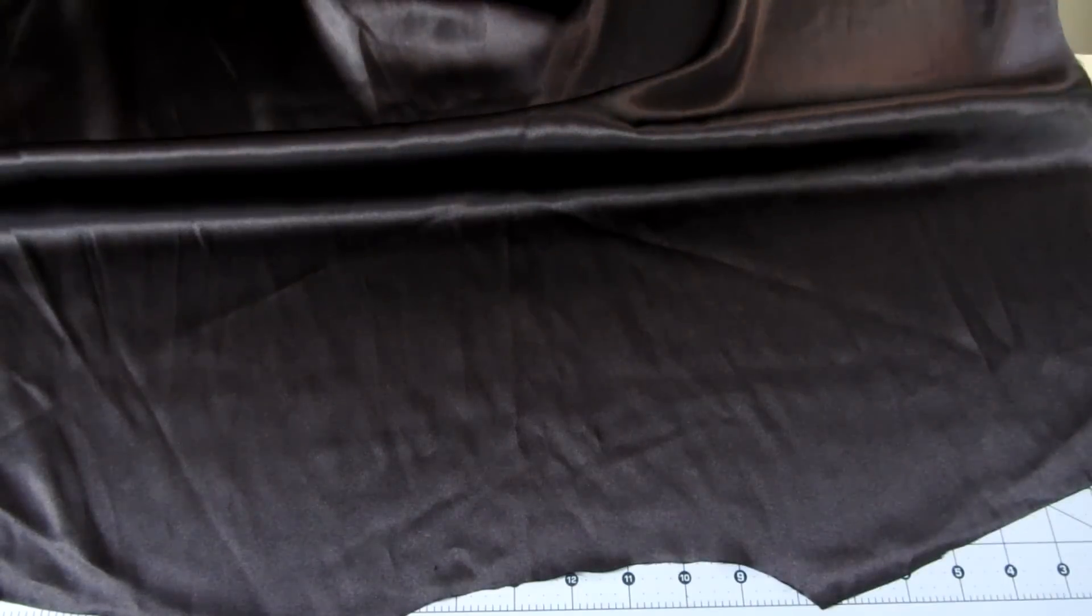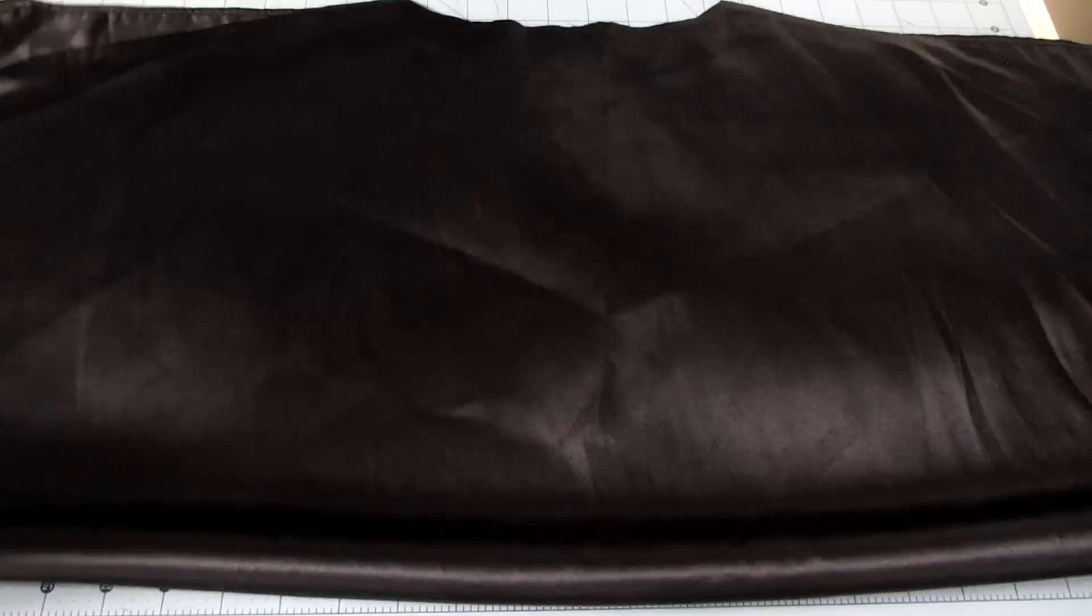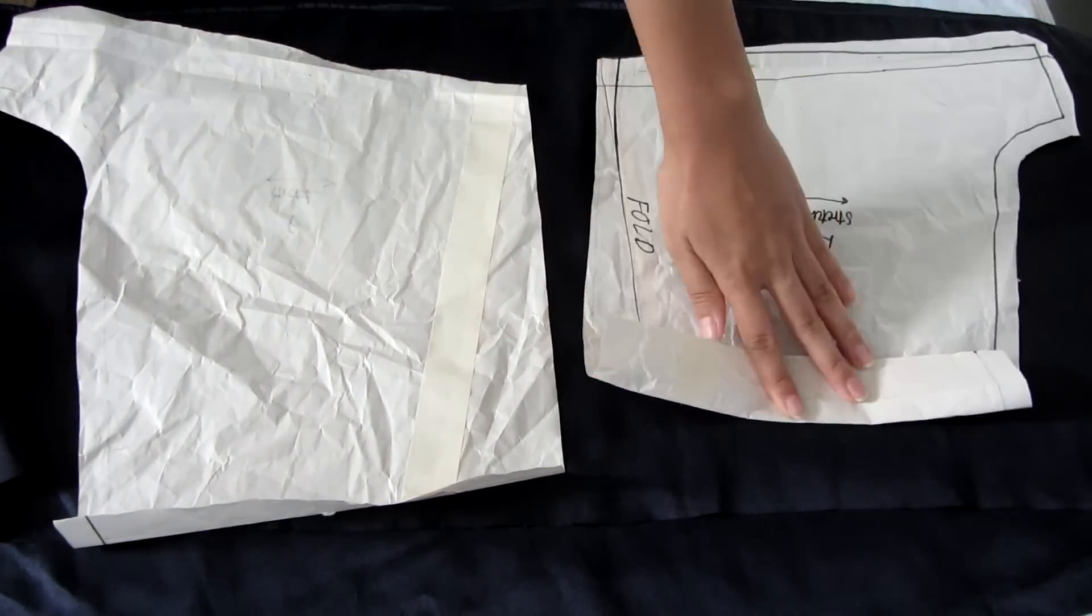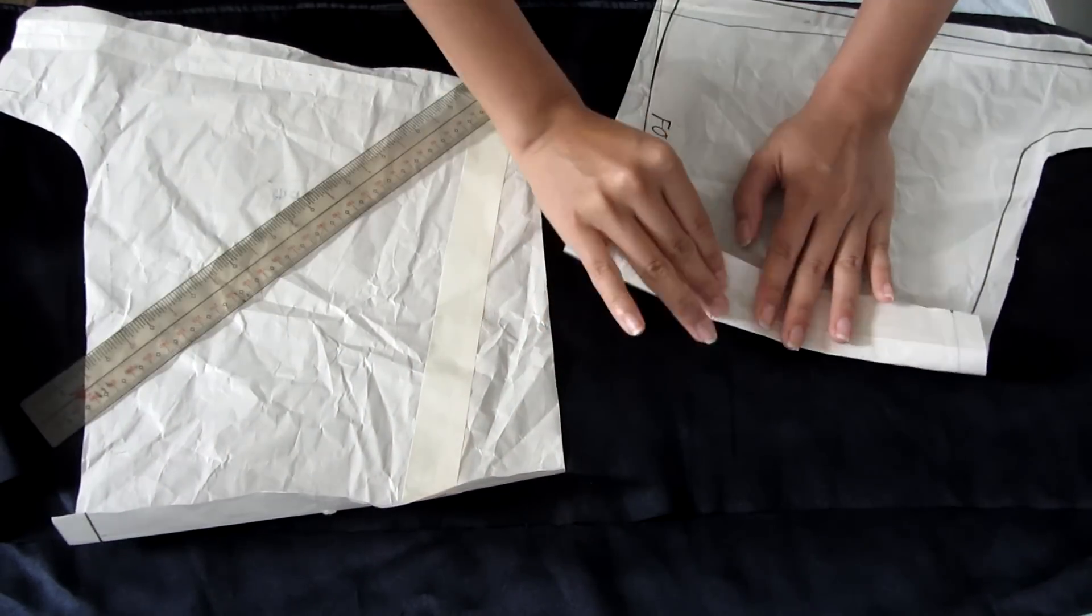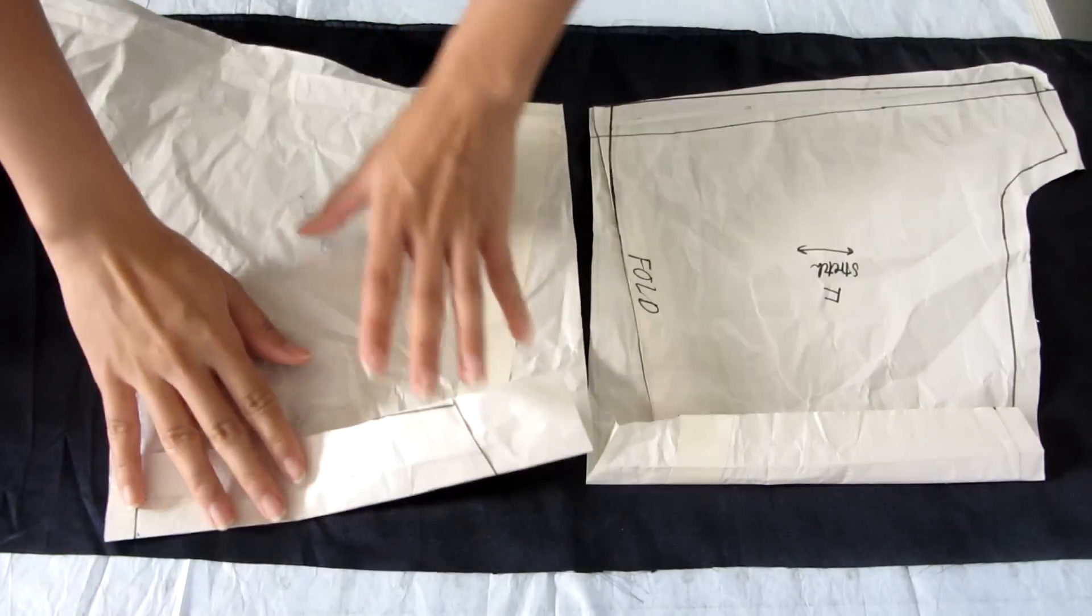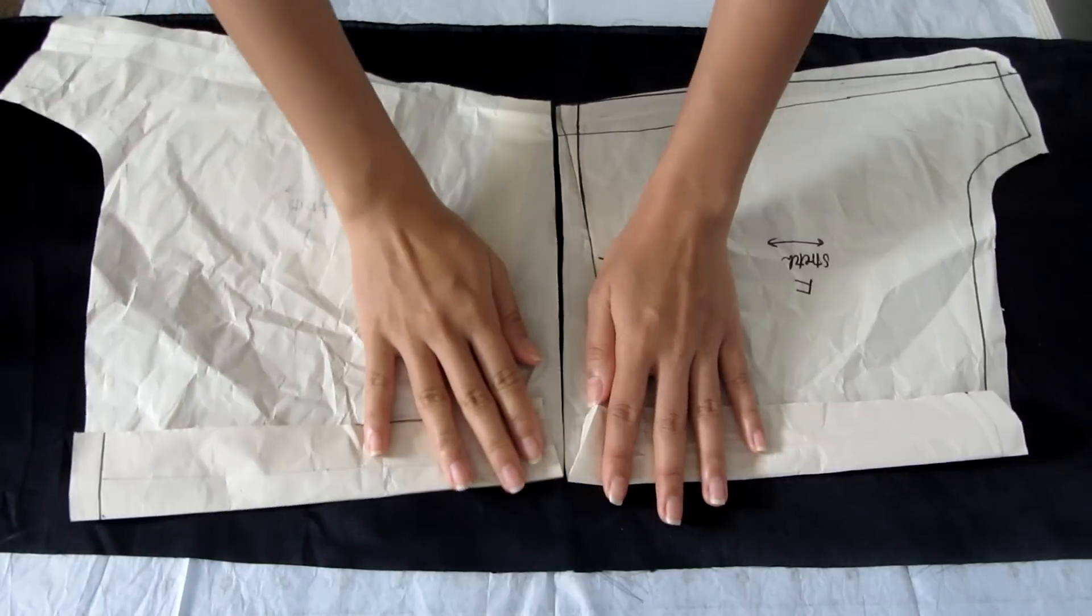For the shorts, I cut the back of the pajama top in half width-wise, and I just used my shorts pattern from my t-shirt romper video. I folded down the pattern pieces an inch and a half at the waist so that it's not sitting high up on my body.